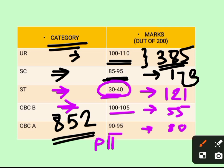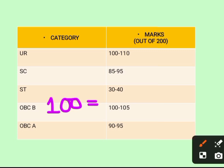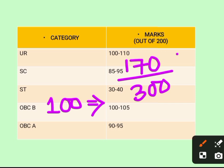The expected final cutoff will be around 170 to 175 for unreserved category, maximum. This may be 5 to 10 numbers less than 170.